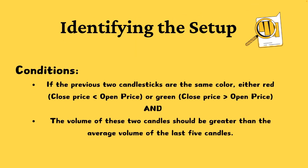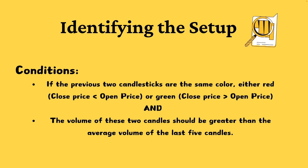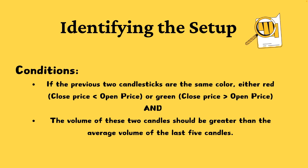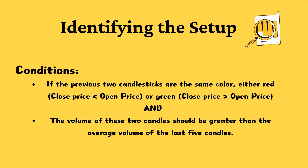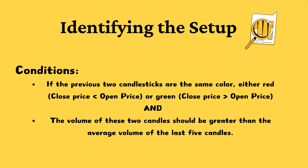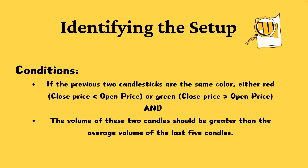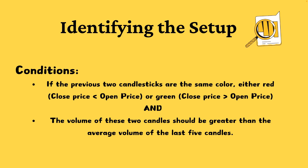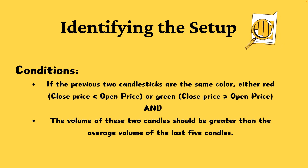Our strategy begins with identifying specific market conditions using candlestick patterns and volume analysis. Think of candlesticks as snapshots of market sentiment over a given period. Here's what we're looking for: we need to check if the previous two candlesticks are the same color, either red or green. Additionally, the volume of these candles should be greater than the average volume of the last five candles.